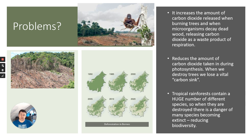Tropical rainforests also contain a huge number of different species, so if they're destroyed there is a danger that many species become extinct, reducing biodiversity. Most pharmaceutical drugs come from plants, so if we destroy the diversity of plants on Earth, we're reducing the number of medicines that could be used in the future.